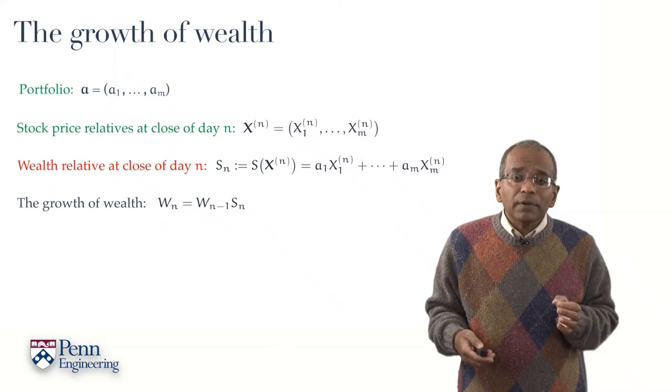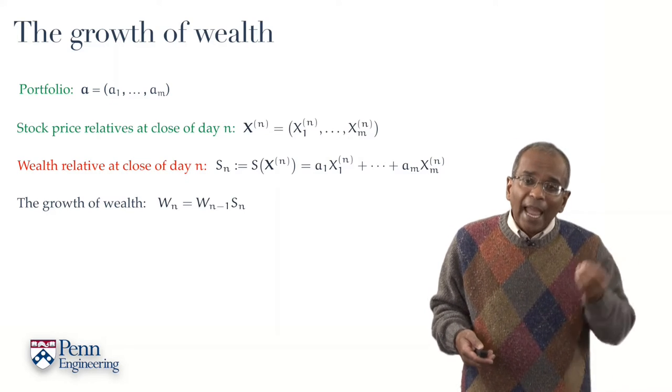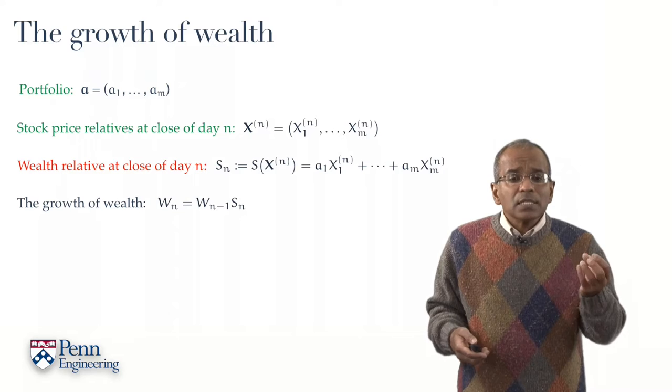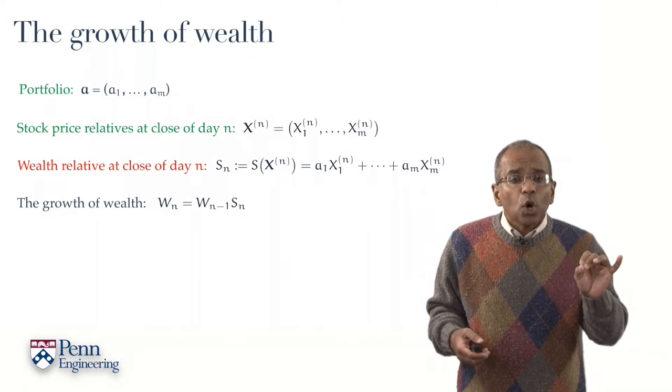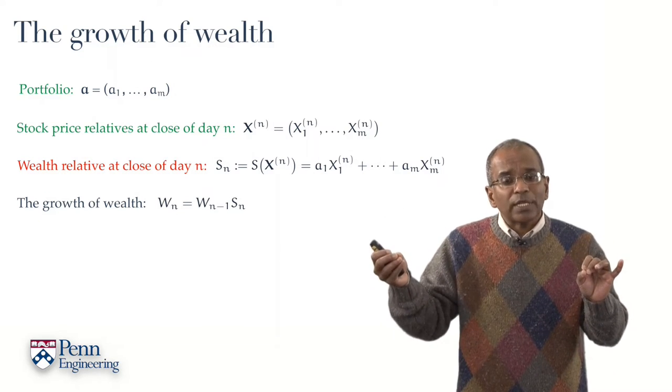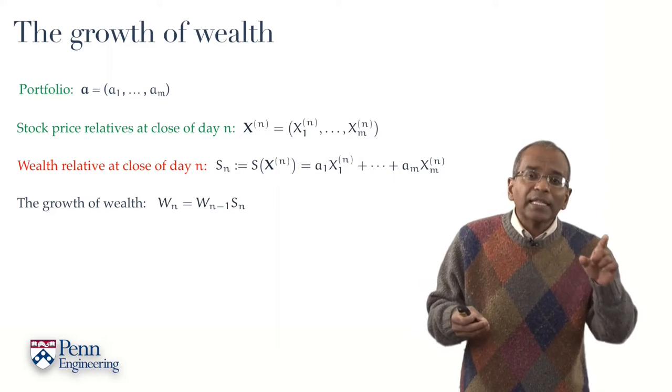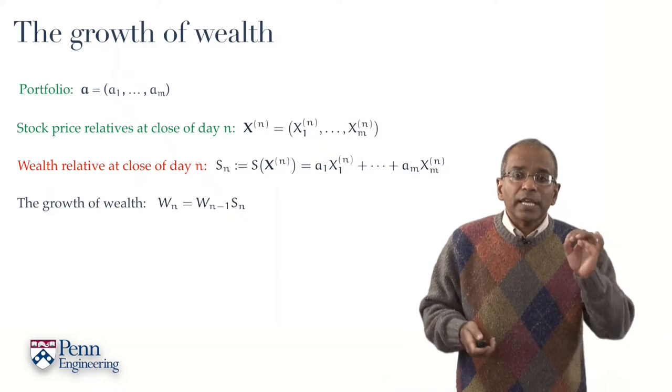The wealth relative at the close of a given day, say n, tells us how much one dollar invested at the end of the previous day's trading will have made at the end of the current day's trading.